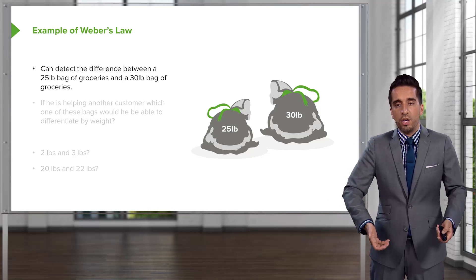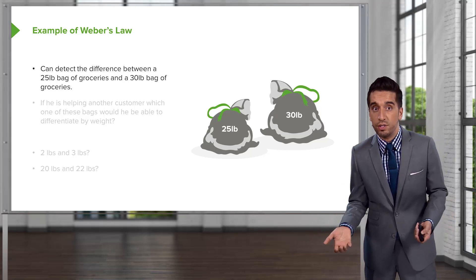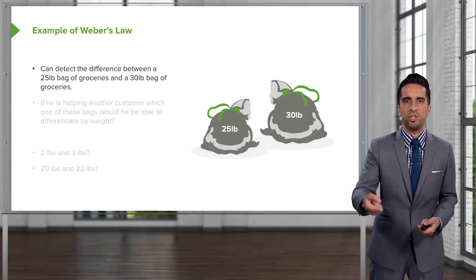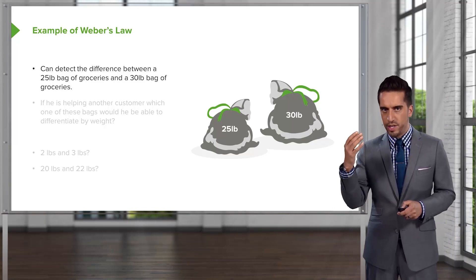And our little friend Timmy, he can detect the difference between a 25 pound bag of groceries and a 30 pound bag of groceries. So, if it's 25 pounds, he knows that weight. And if it jumps up to 30, he can detect that there is a difference. Now, my question to you is, what's the JND? Let that marinate for a second.